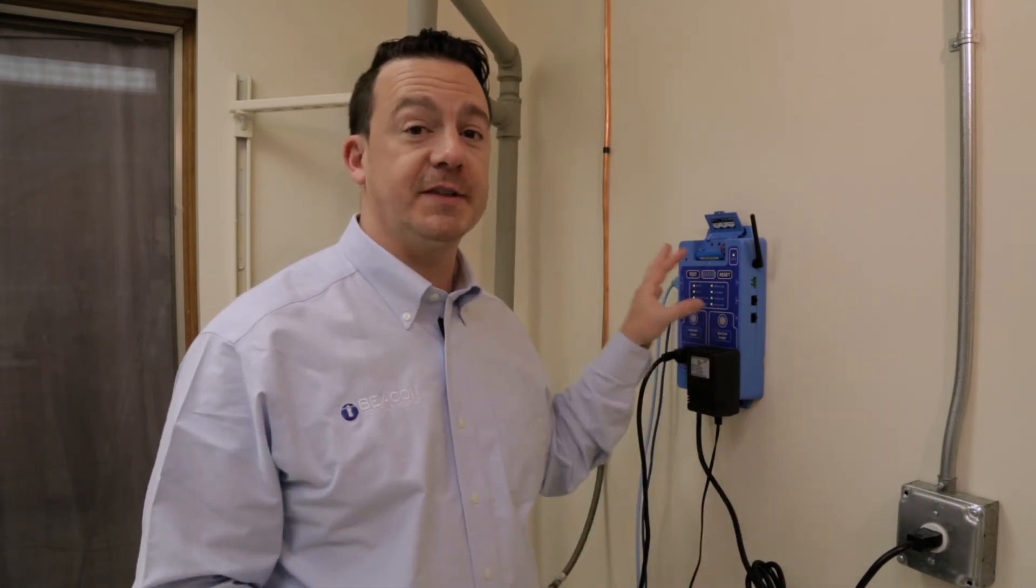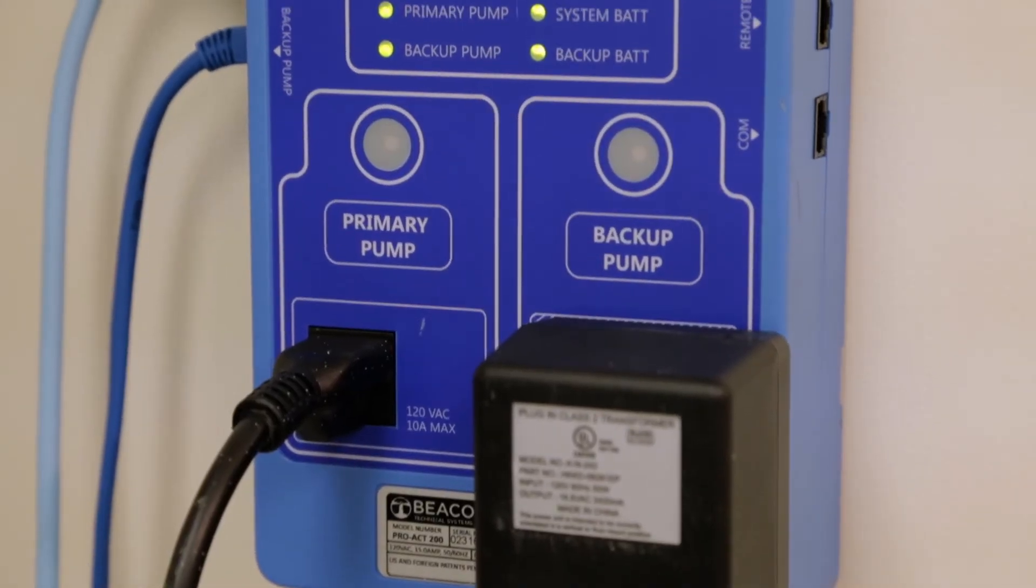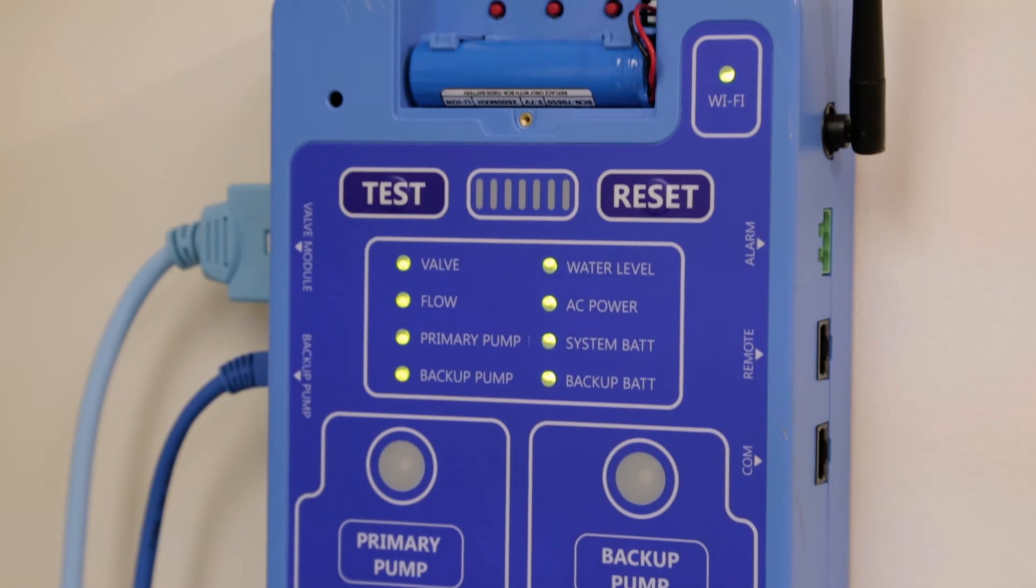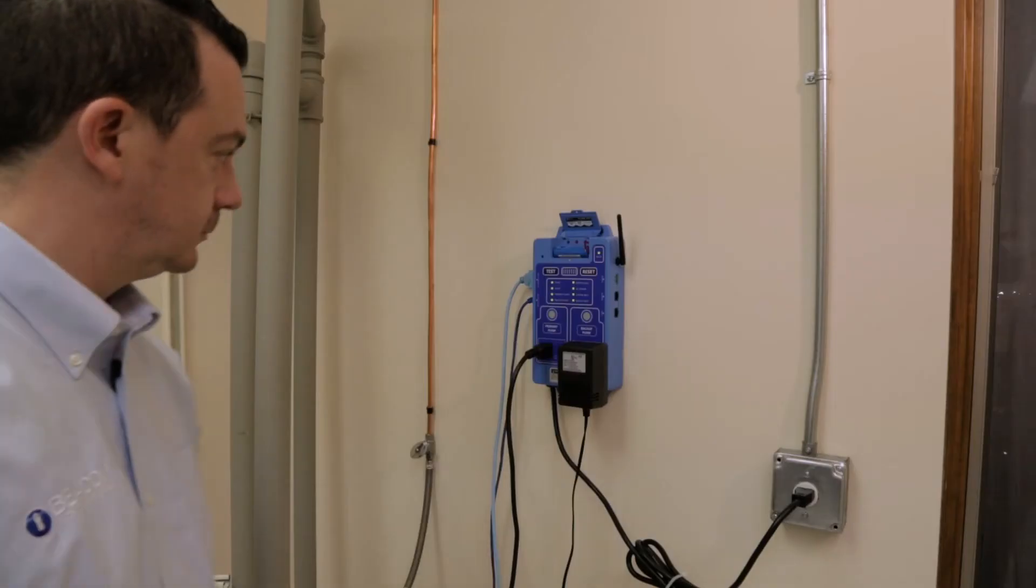Note that the controller powers up in standby mode with both pump status lights off. Now you are ready to set up the controller and calibrate the system. First, select the operating mode of controller that is appropriate for the sump pump installation.